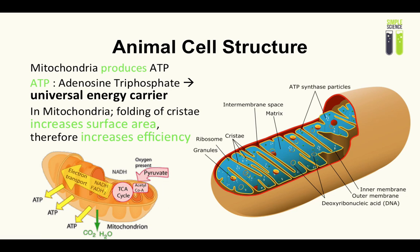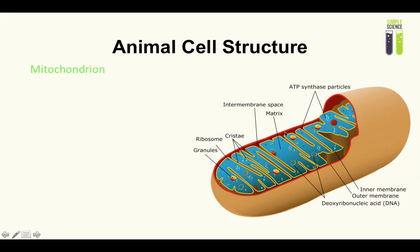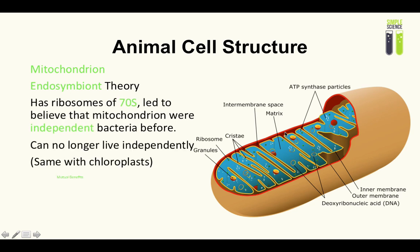Now let's look at the endosymbiont theory. 'Endo' means inside, and a symbiont is an organism that lives inside another organism for mutual benefit. In the 1960s, scientists discovered that the mitochondrion was not originally an organelle — it was actually an independent bacterium.